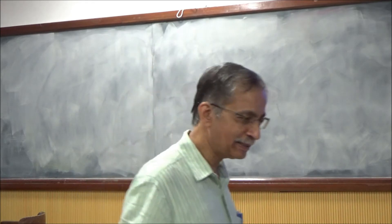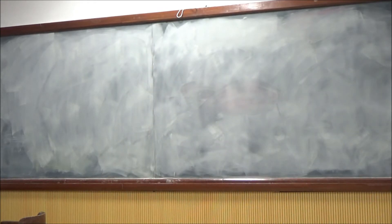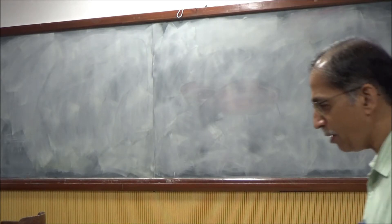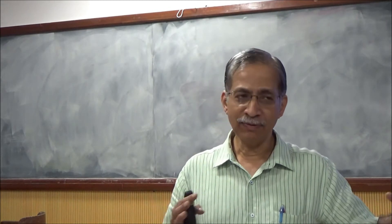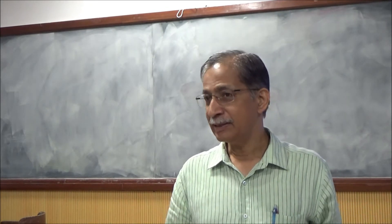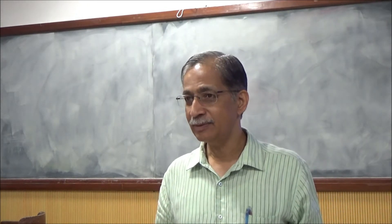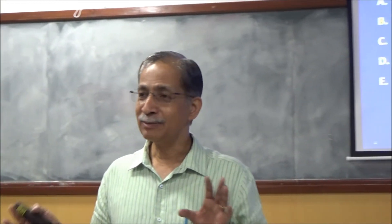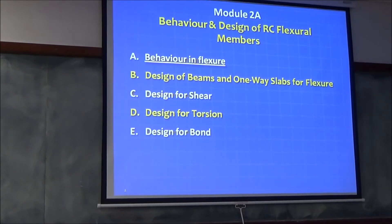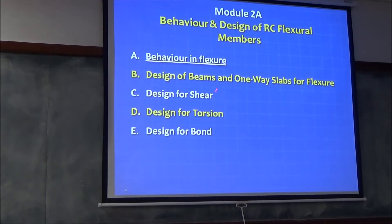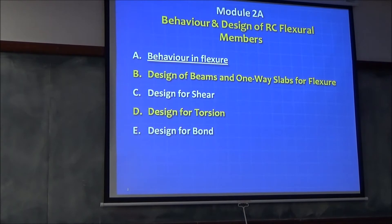So these are the five topics. Broadly you have two limit states: limit states of collapse — and it's not one, you can have multiple possible limit states of collapse. You have flexure, shear, torsion, bond, or you can have a combination. So those are the limit states of collapse.